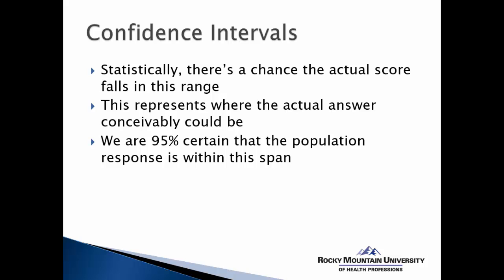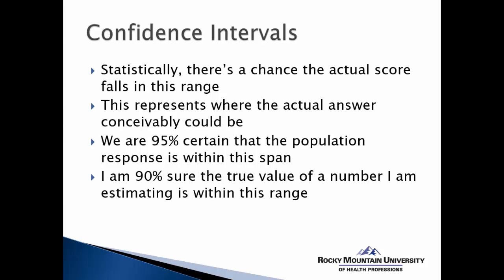Now here we can incorporate the idea of the actual probability that the score falls within a certain range by saying we are 95% certain that the population response is within this span or within this range. Now if you are using 90% confidence intervals, you can say I am 90% sure the true value of a number I am estimating based upon a sample is within this range in the population.